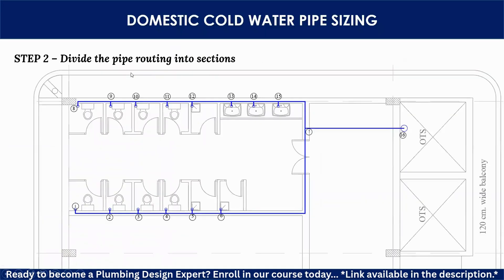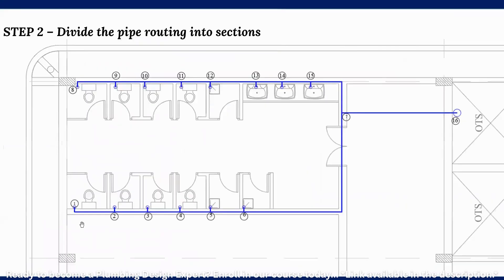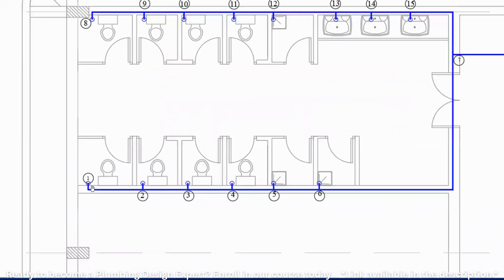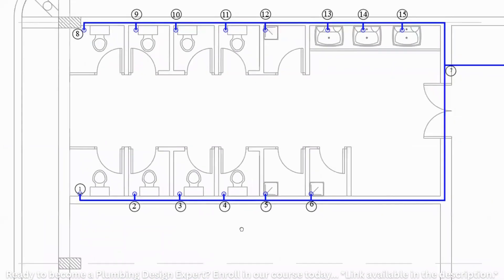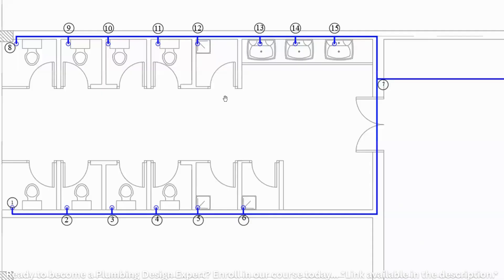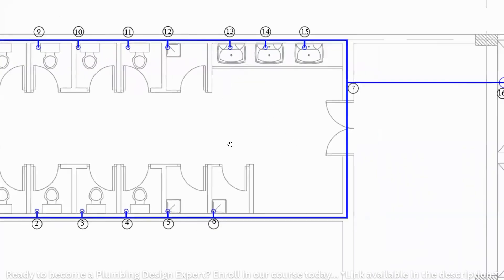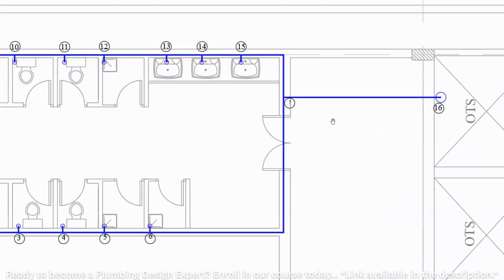In Step 2, we divide the pipe routing into sections. As you can see, we have different sections: 1–2, 2–3, 3–4, 4–5. The complete layout drawn in Step 1 is divided into different pipe sections.